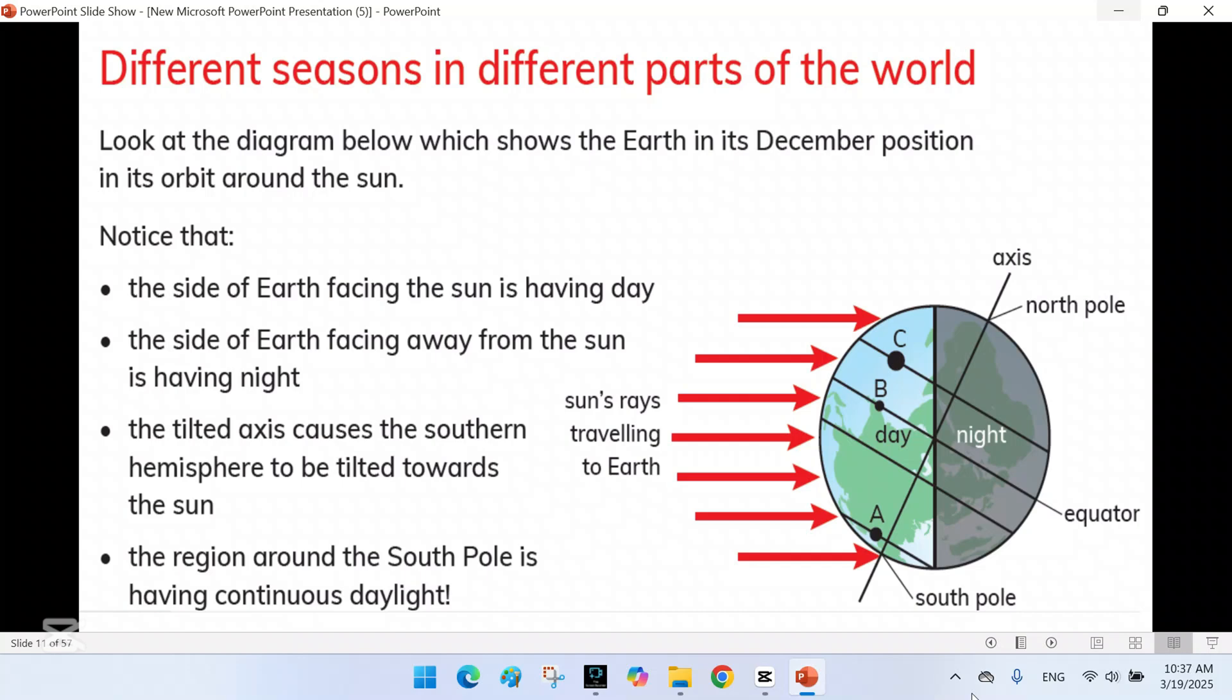So the conclusion is, in this video we have learned about Earth's orbit and how it affects the changing of seasons. Earth's orbit around the sun, along with its tilted axis, creates the cycle of seasons which we experience each year. We have also seen how different parts of the world have varying seasons.